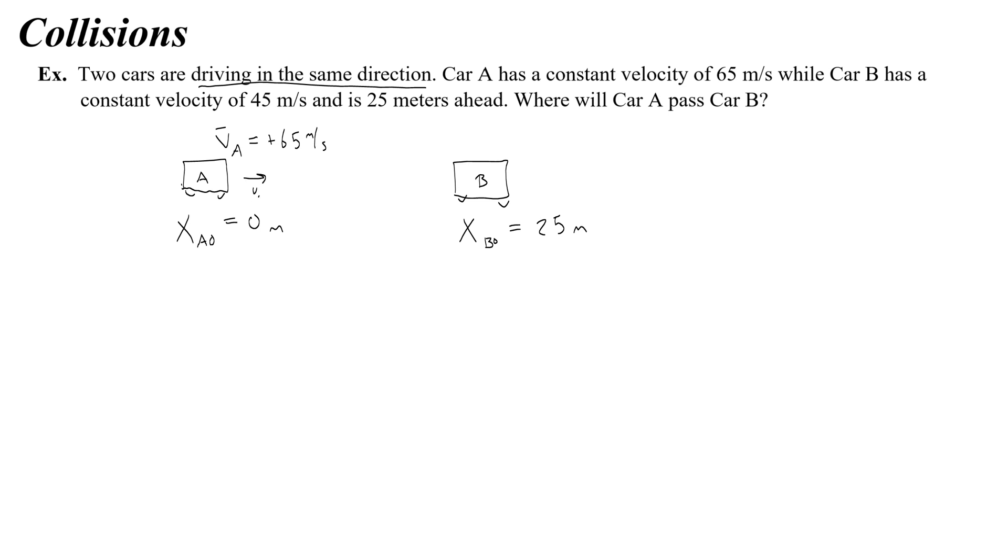B, and I can put like a little arrow here if I want to represent vA. B is also moving to the right, but with a smaller velocity. And the velocity of B in the same direction, so it's also positive, is 45 meters per second.